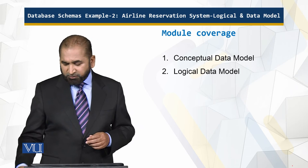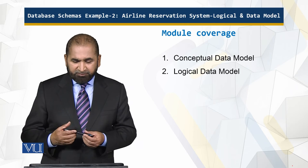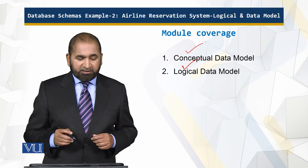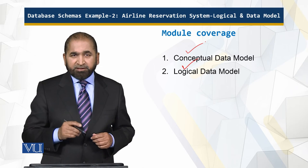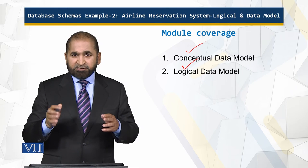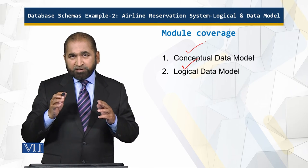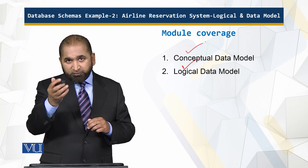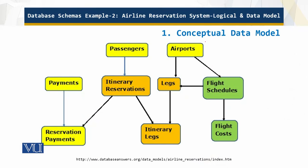We will be looking at the conceptual data model and the logical data model. I will also give a brief explanation of a definition which is central to this kind of system — something I also mentioned in the background. On the screen you can see the conceptual data model, and something prominent here is 'legs.' So what is a leg?